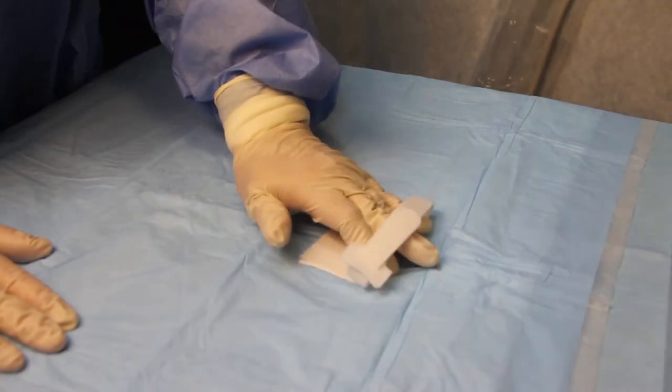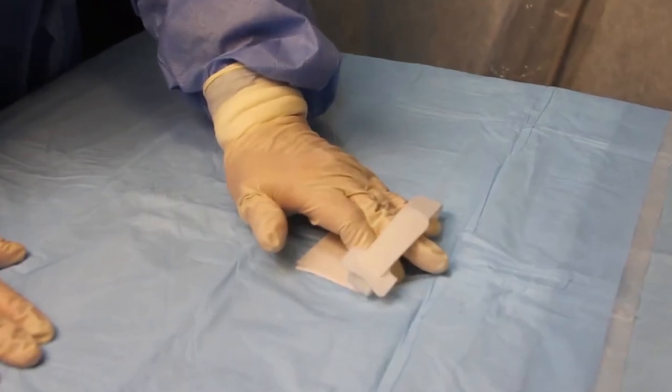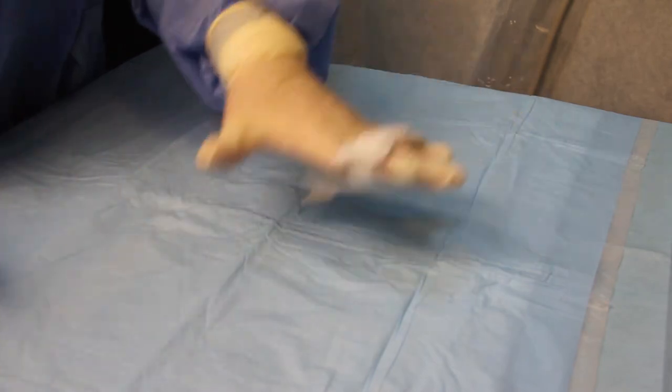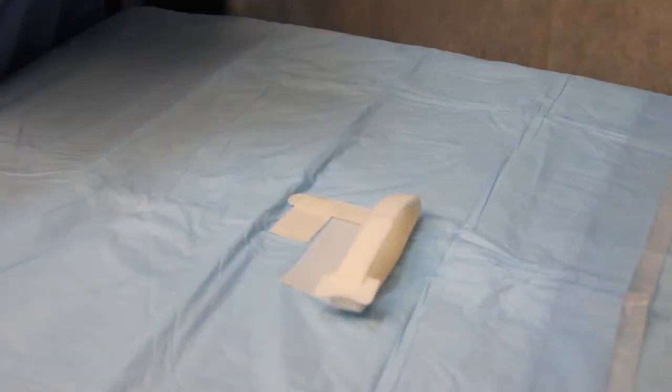Pick up the AnchorSound with your hand through the loop so the Velcro is on your palm. Peel the backing off the large pad only. Place the AnchorSound on the sterile field where you would normally put the ultrasound probe.